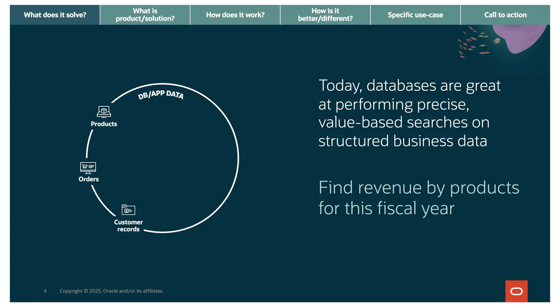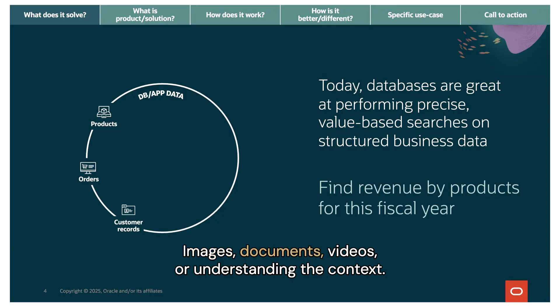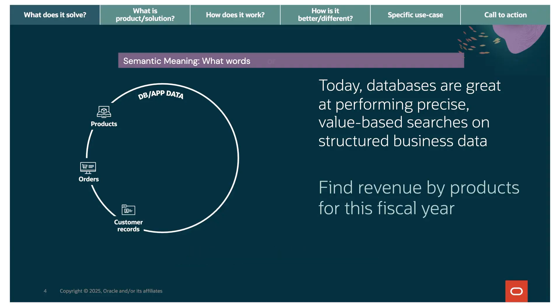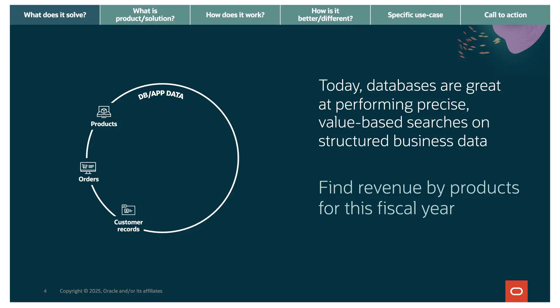But notice what's not here: images, documents, videos — and the understanding of context. Context is what we call semantic meaning: what words or symbols actually mean, not just their literal form. Traditional databases weren't designed to understand semantic meaning. And that's the opportunity.